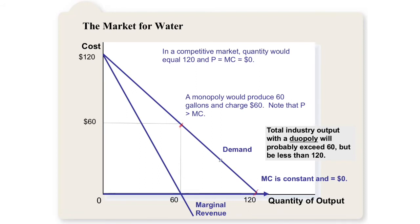The basic rule is: the more firms in the market, the closer the quantity will be to the competitive outcome. The fewer firms in the market, the closer the quantity will be to a monopoly. So in a duopoly, the outcome will be much closer to a monopoly than an oligopoly with, say, six to eight firms.